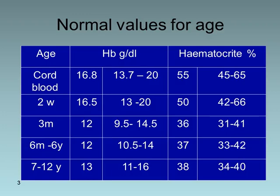The highest level of hemoglobin and hematocrit is found in cord blood: hemoglobin 16.8 g/dL (range 13.7–20) and hematocrit 55% (range 45–65). It then decreases from two weeks of age, reaching 12 g/dL by three months — called physiological anemia of infancy. It remains 12 g/dL from six months to six years, then rises to 13 g/dL with hematocrit 38% at ages 7–12 years.